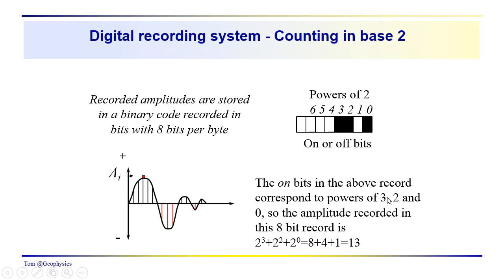So, the on bits in the above record correspond to powers of three, two, and zero. So, the number that we get is two to the third plus two squared plus two to the zero, or eight plus four plus one. So, this recording system using base two recording is telling us that we have a number stored here that's equal to 13. This could be the amplitude of this particular sample. But we'd have eight bits where we'd have one byte of data for each amplitude.